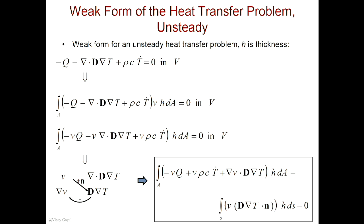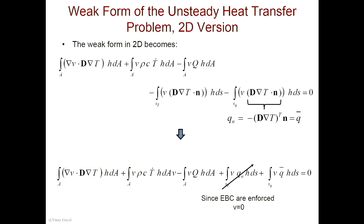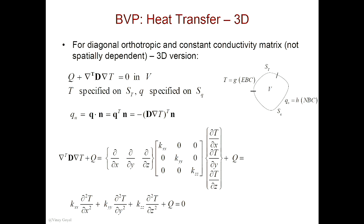So I've broken up the integral into the line integral where the temperature is specified, and I've broken it into the line integral where the natural boundary condition — the heat flux — is specified. I want you to notice that this is what we called Q_N earlier. That's Q_N right there, which we had defined in Lecture 4.